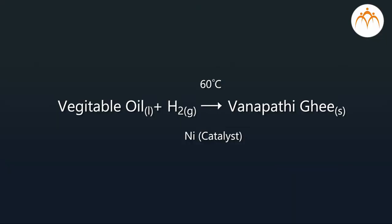For a chemical reaction to proceed, specific temperature, pressure, or catalyst conditions may be required. These conditions are shown below or above the arrow. For example, vegetable oil plus H2 at 60 degrees Celsius gives Vanaspati ghee under nickel catalyst.